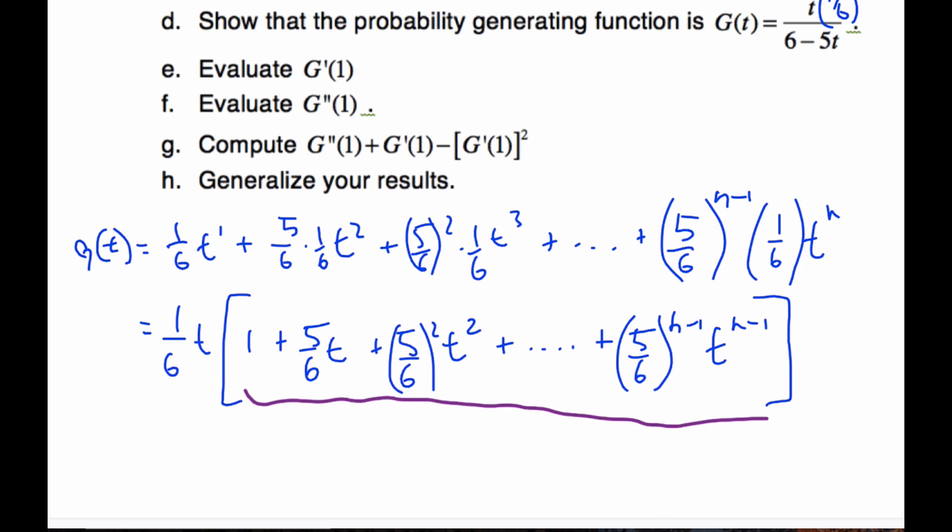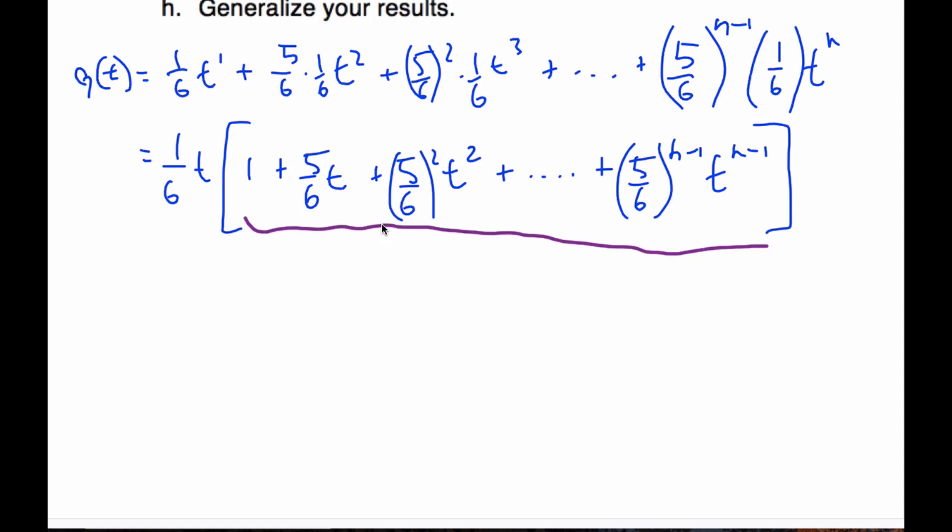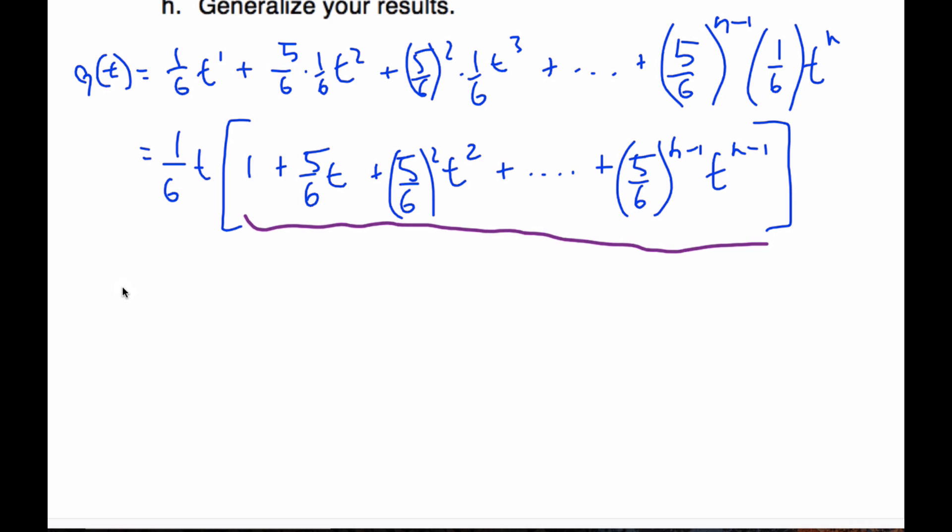And so now if I look really carefully at this, this part here should look familiar to you. It's a geometric series, an infinite one. So this one's simply going to be, if I take U1 which is one, plus one minus the ratio that's multiplied each time I multiply by five-sixths T. This is going to be multiplied by five-sixths T.